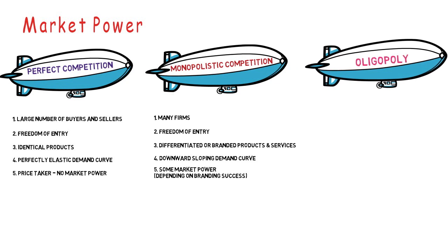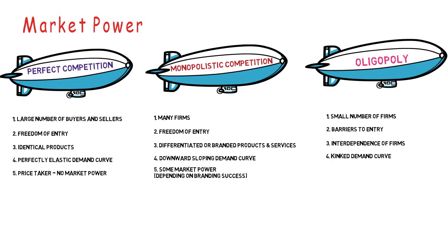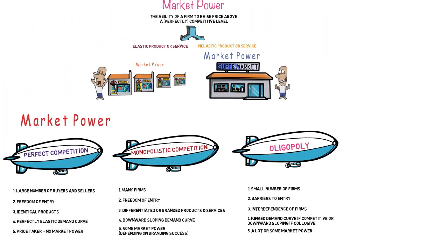The next market type is oligopoly, where there is just a small number of firms — a small few competitors. This might be mobile providers, the airline industry, or supermarkets, where certain barriers to entry block new firms. With a small number of firms there is interdependence — they undertake strategic behavior based on what other firms are doing. This gives a kinked demand curve if it is a competitive oligopoly, or a downward sloping demand curve if it is collusive. Market power ranges from a lot in a collusive oligopoly to very little in a competitive one.